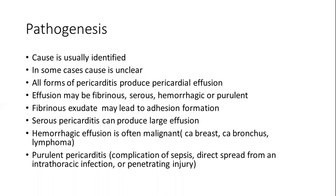Serous pericarditis can produce a large amount of effusion leading to cardiac tamponade. Hemorrhagic effusion is more suggestive of malignant diseases such as carcinoma of the breast, carcinoma of the bronchus, or lymphoma. Purulent pericarditis may be a complication of septicaemia, direct spread from an intrathoracic infection, or penetrating injury. The type of fluid can therefore help us differentiate the various types of pericarditis.